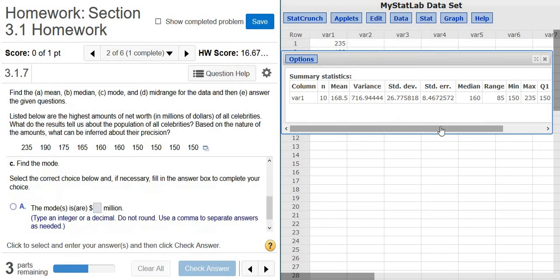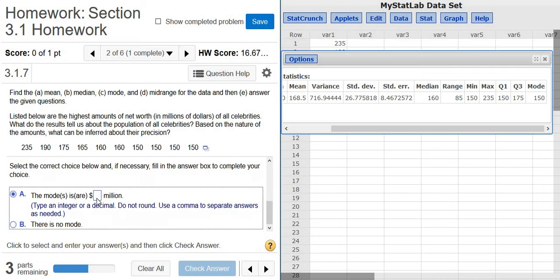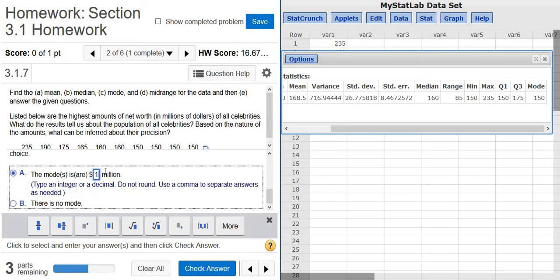The mode—let's see if there is a mode in this case. The mode is 150. It's the one that appears the most. Look, 150, 150, 150, 150. Yeah, it was pretty obvious. So the mode is 150 million dollars.